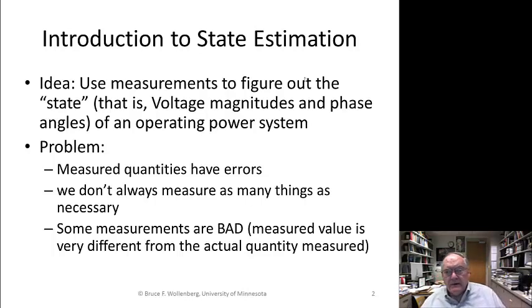The idea of state estimation is as follows. Can we use measurements of the system? By measurements, I mean we could measure P flowing on a transmission line, Q, I can measure V. We'll see later on in the end of the second lecture that there's now the ability to actually measure bus phase angles. But can I use measurements to figure out the state of the system? Now, by state, I mean the voltage, magnitude, and phase angle of an operating power system.